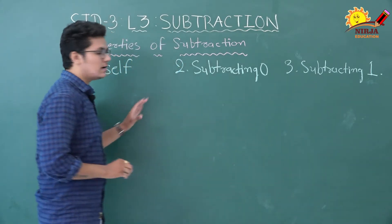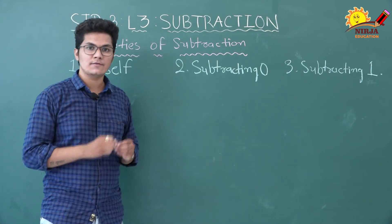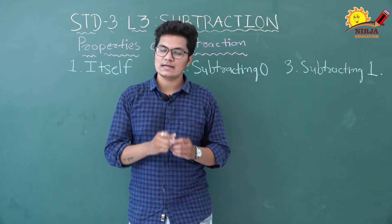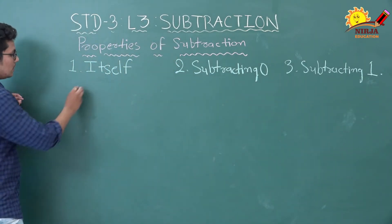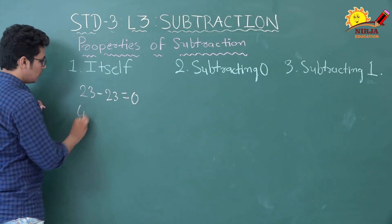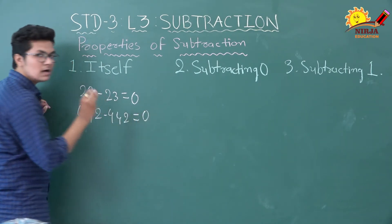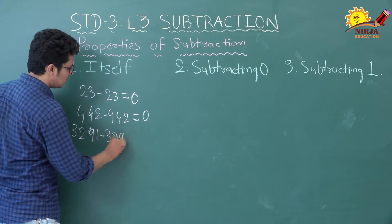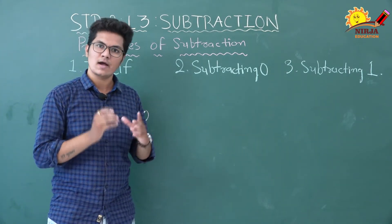Now let's learn about the properties of subtraction. There are three properties. First: if you subtract any number from the number itself, the answer will be zero. For example, 23 minus 23 is zero, 442 minus 442 is zero, 3291 minus 3291 is zero. If you subtract a number from itself, the answer will always be zero.